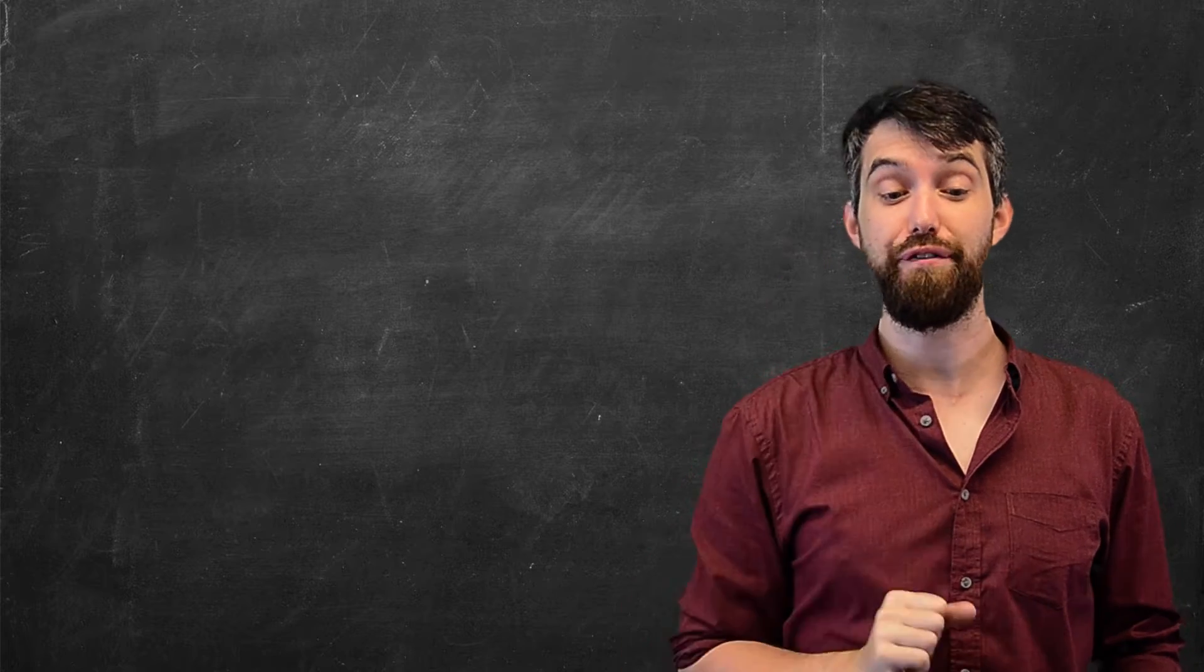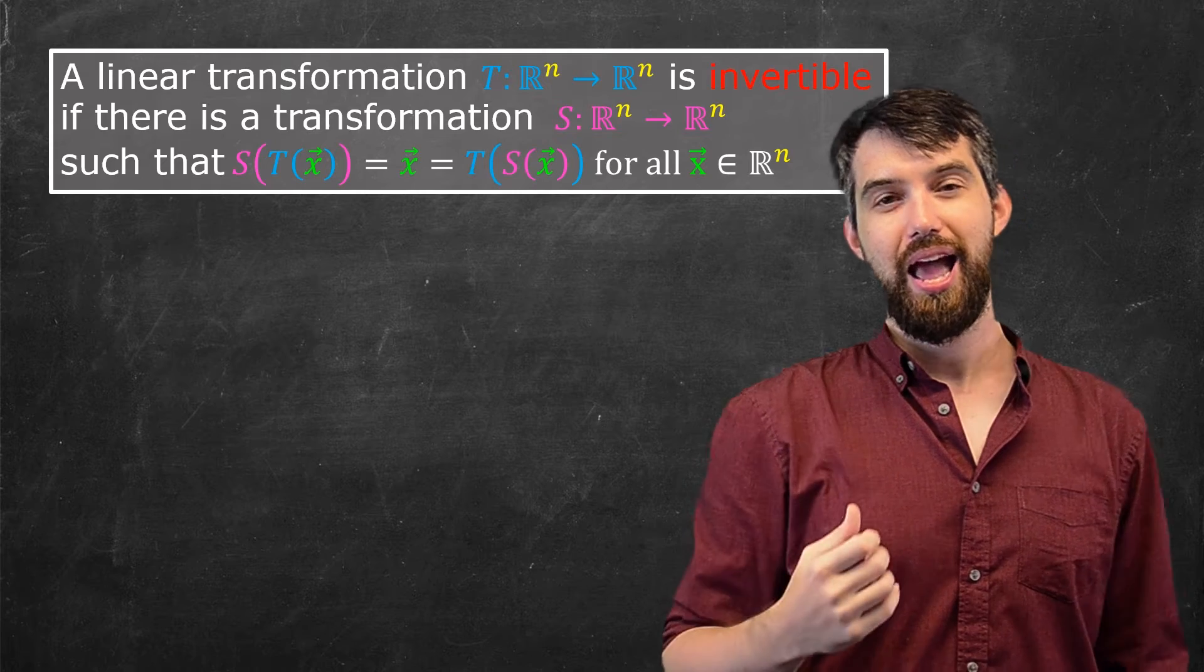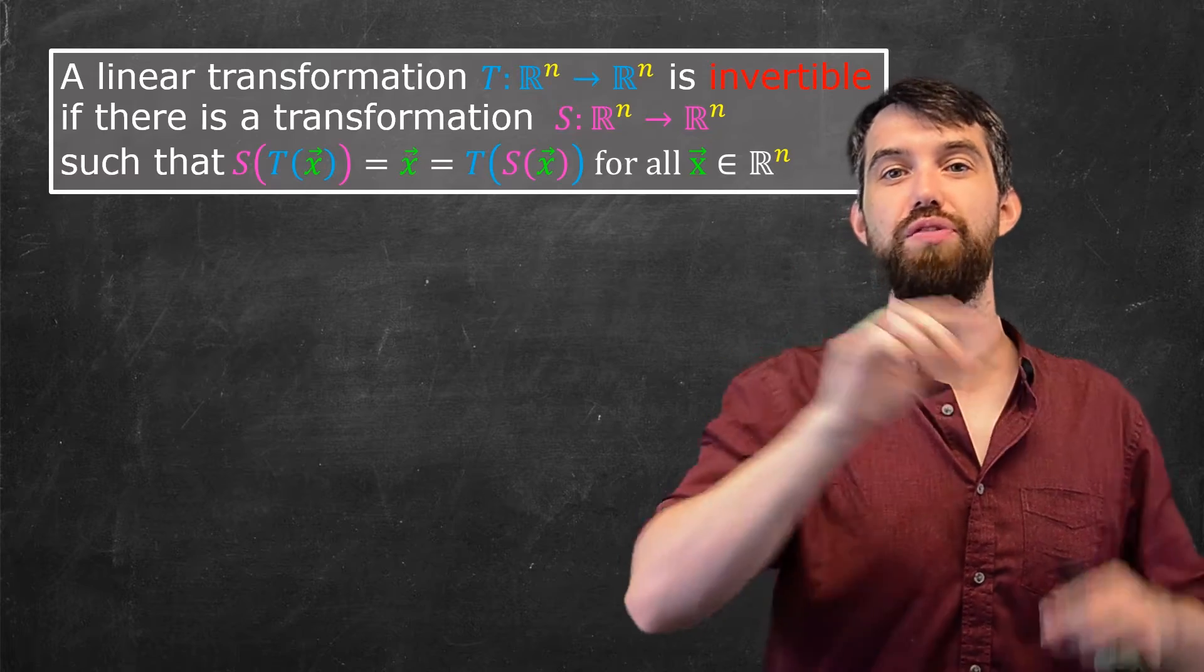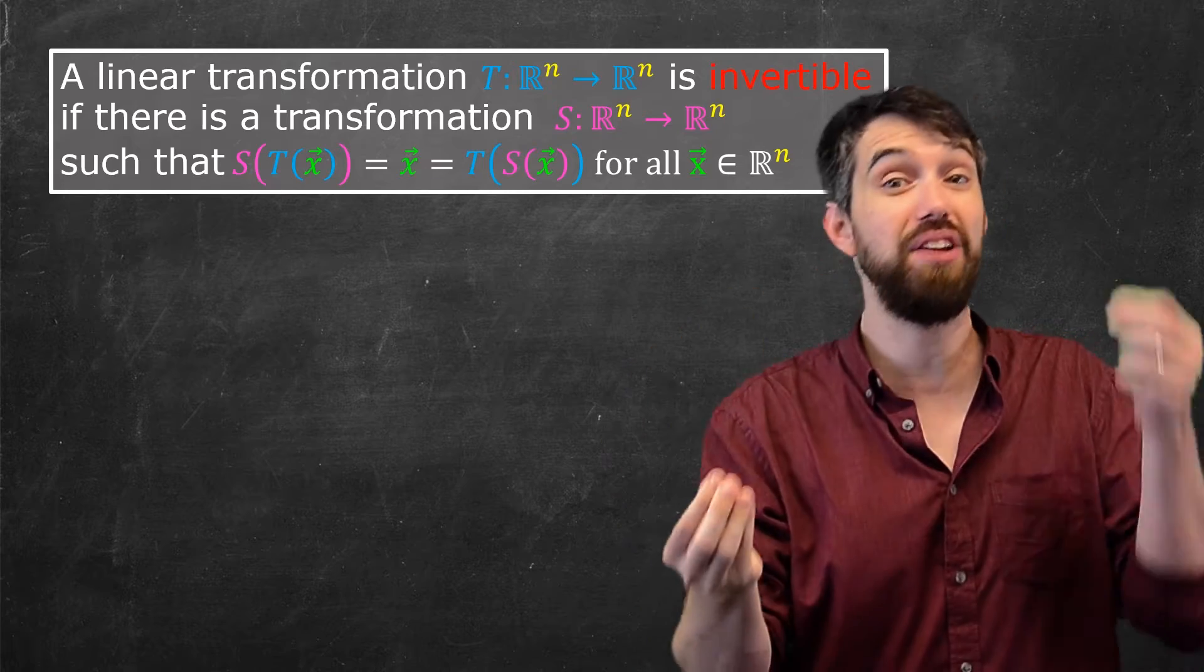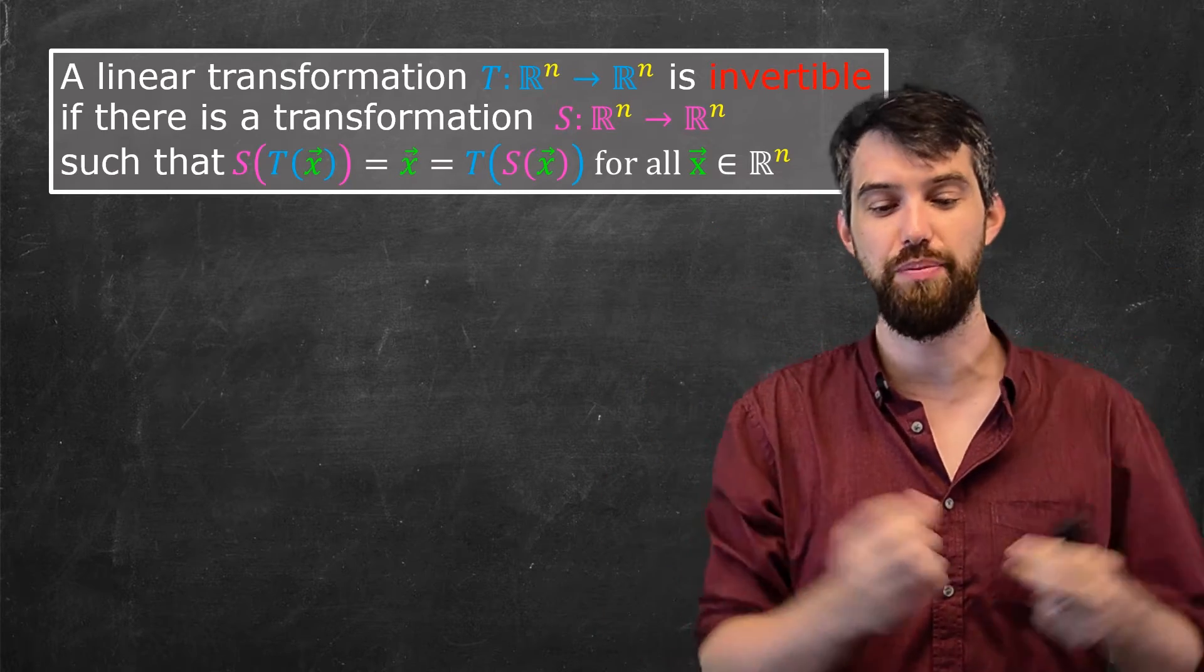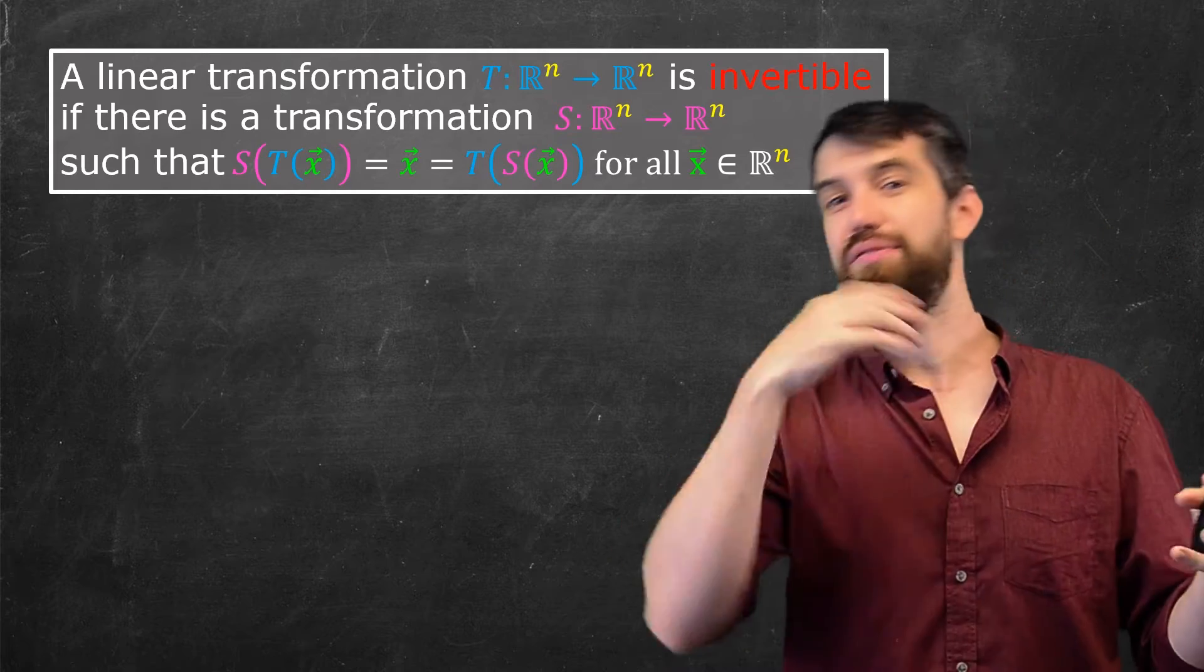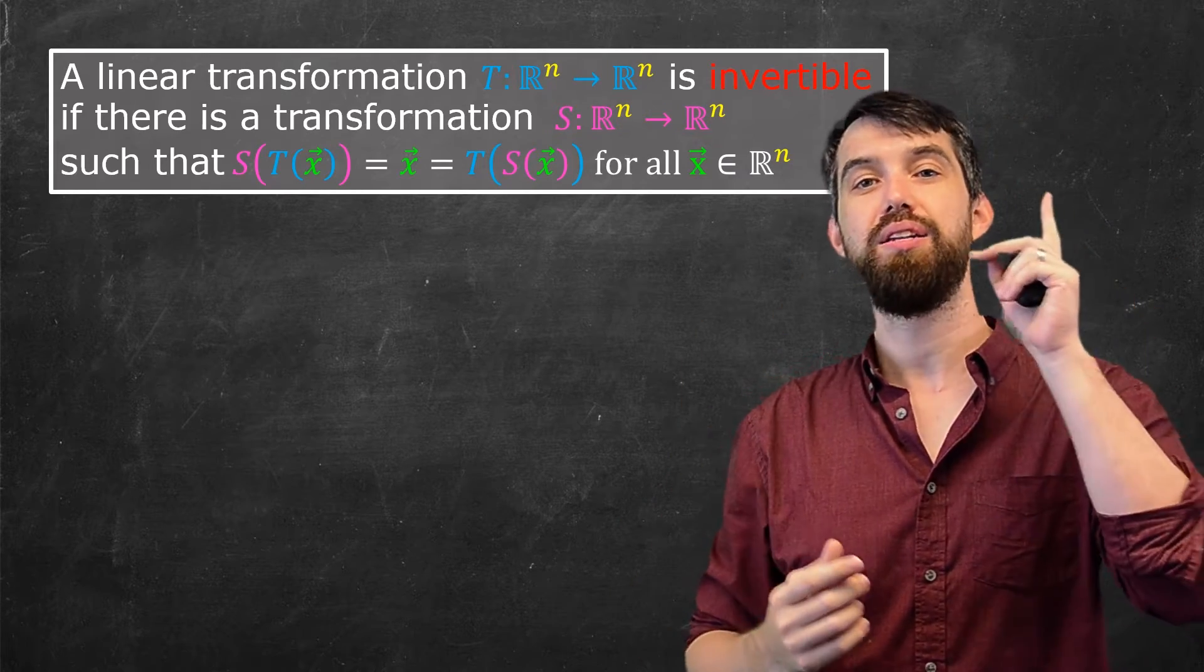So this is what we're going to define to be a linear transformation. I've got a T transformation from Rn to Rn. And the claim is that transformation is invertible if there's some other transformation that I call S, also from Rn to Rn. They need to be from Rn to Rn in both cases so that the dimensions match, so that it makes sense in both directions. But if you have this, then the claim of being invertible is that if you can compose them in either way, S of T of X or T of S of X, either way you get back to the identity.